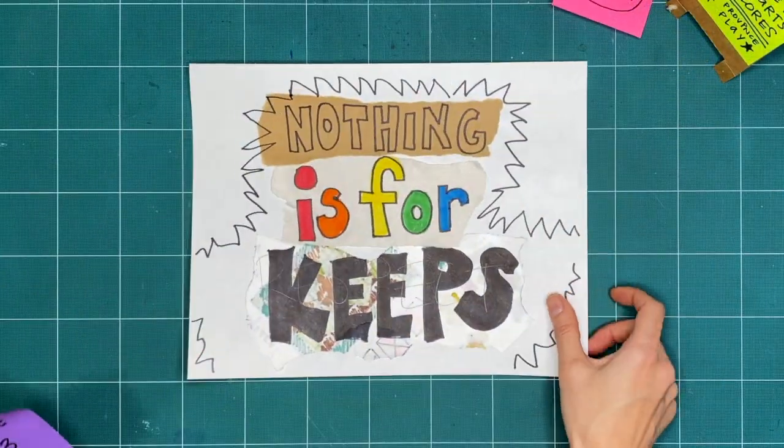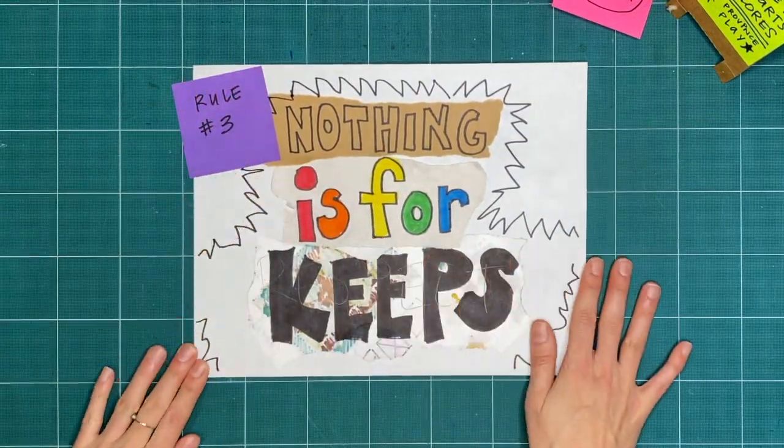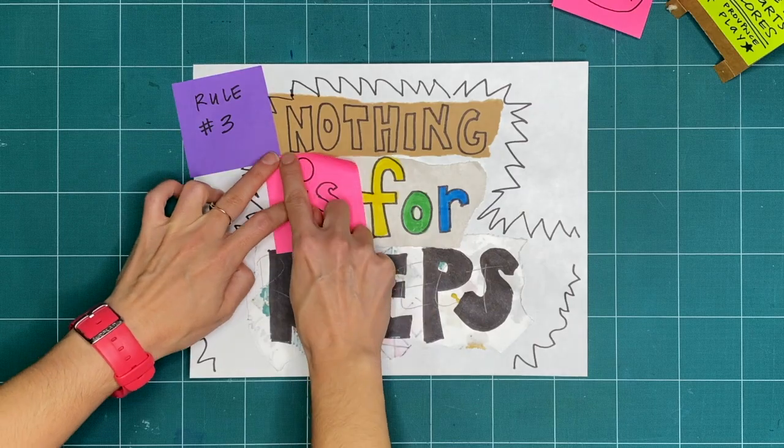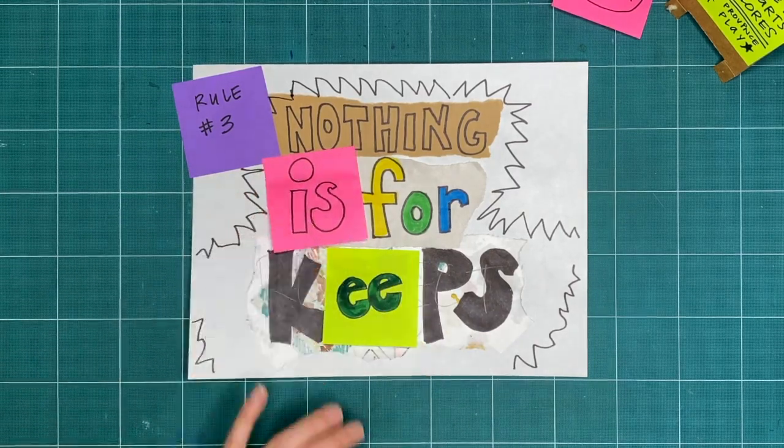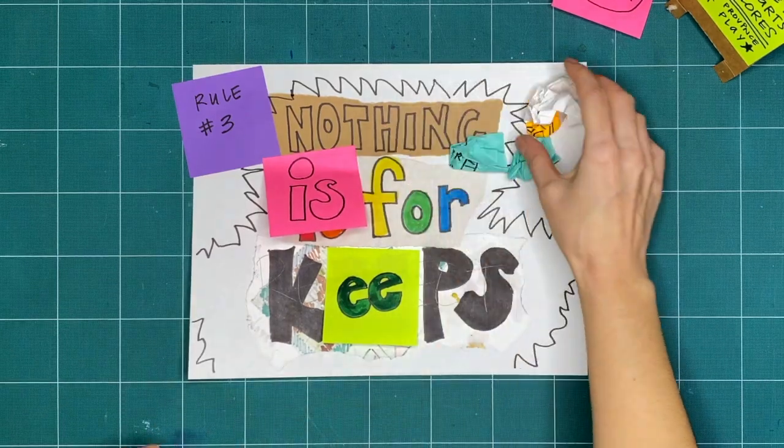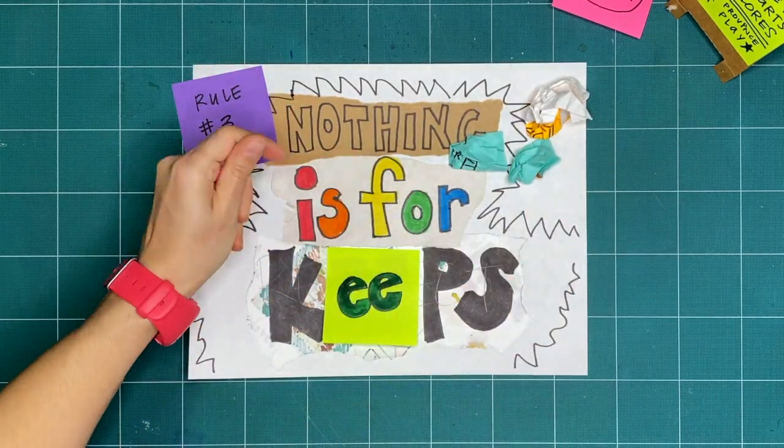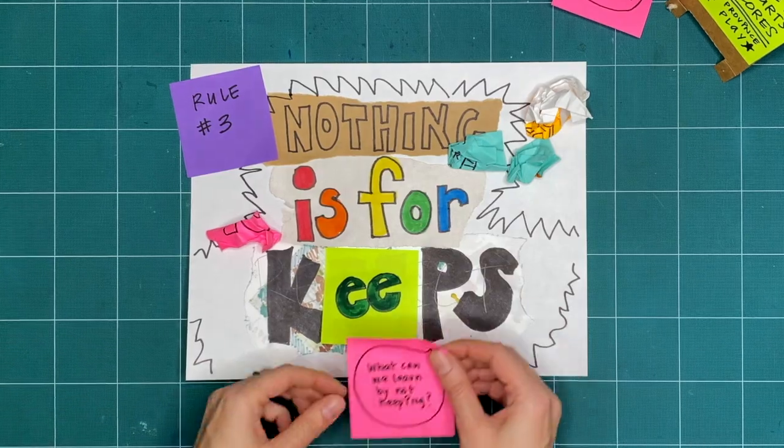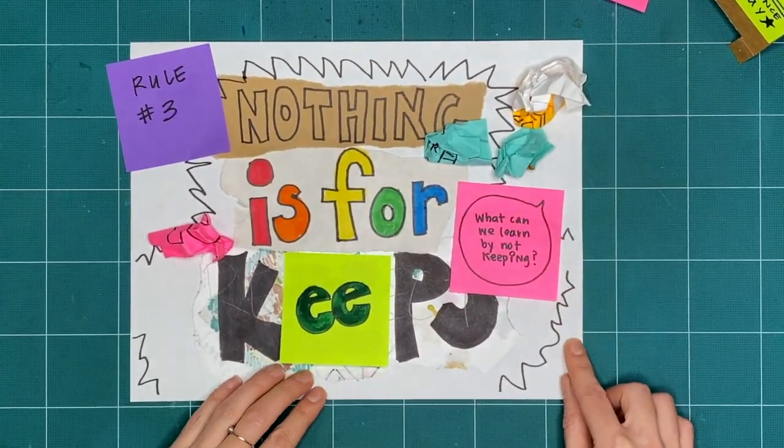Rule number three is nothing is for keeps. Everything we make together is a test, or a draft, or creative playtime. We're just trying things out. What can you make or try today, and then take apart or recycle? What can we learn by making and not keeping?